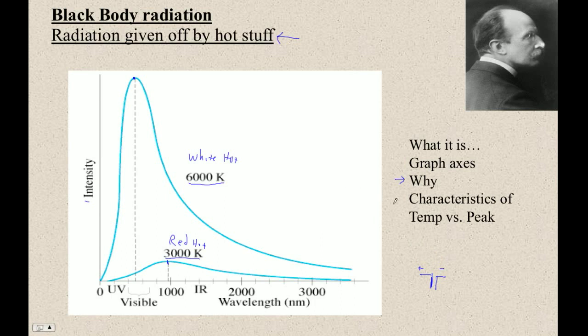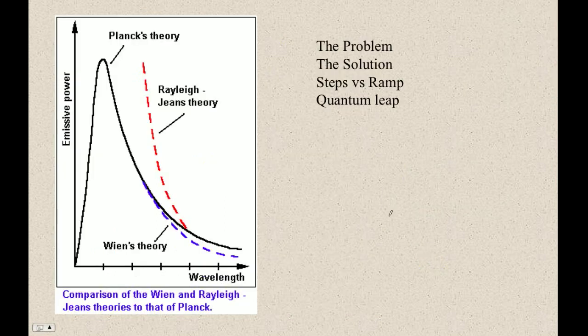Now, this is all pretty mundane stuff, fairly well understood, but here's the problem. In Planck's time, the best theory was Wien's theory. And Wien's theory at the large wavelength end was, there's a huge discrepancy. This is what's actually happening. This is what his formula predicted. And how these formulas work is beyond the scope of this class, but Wien's theory was a classical theory.